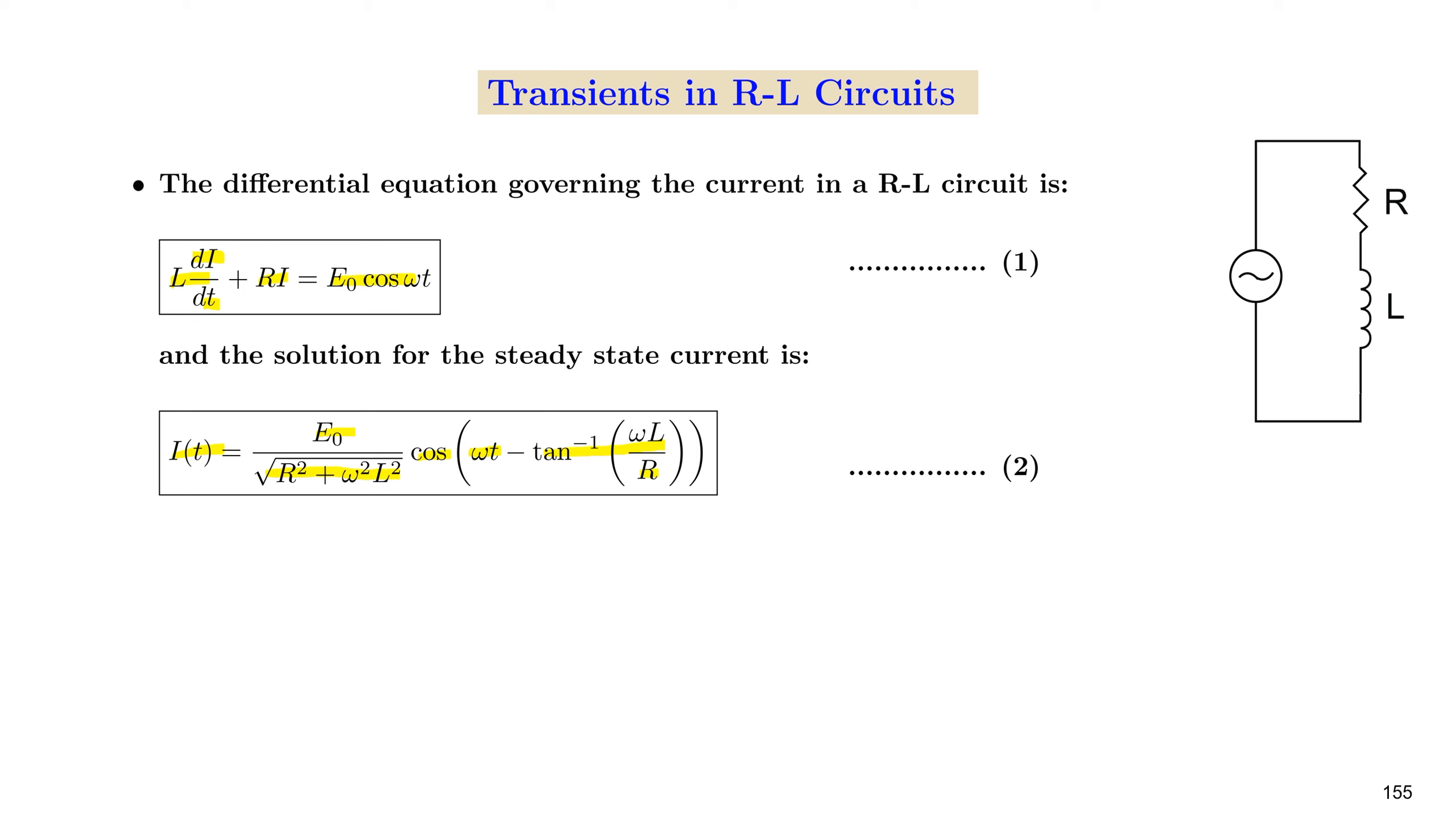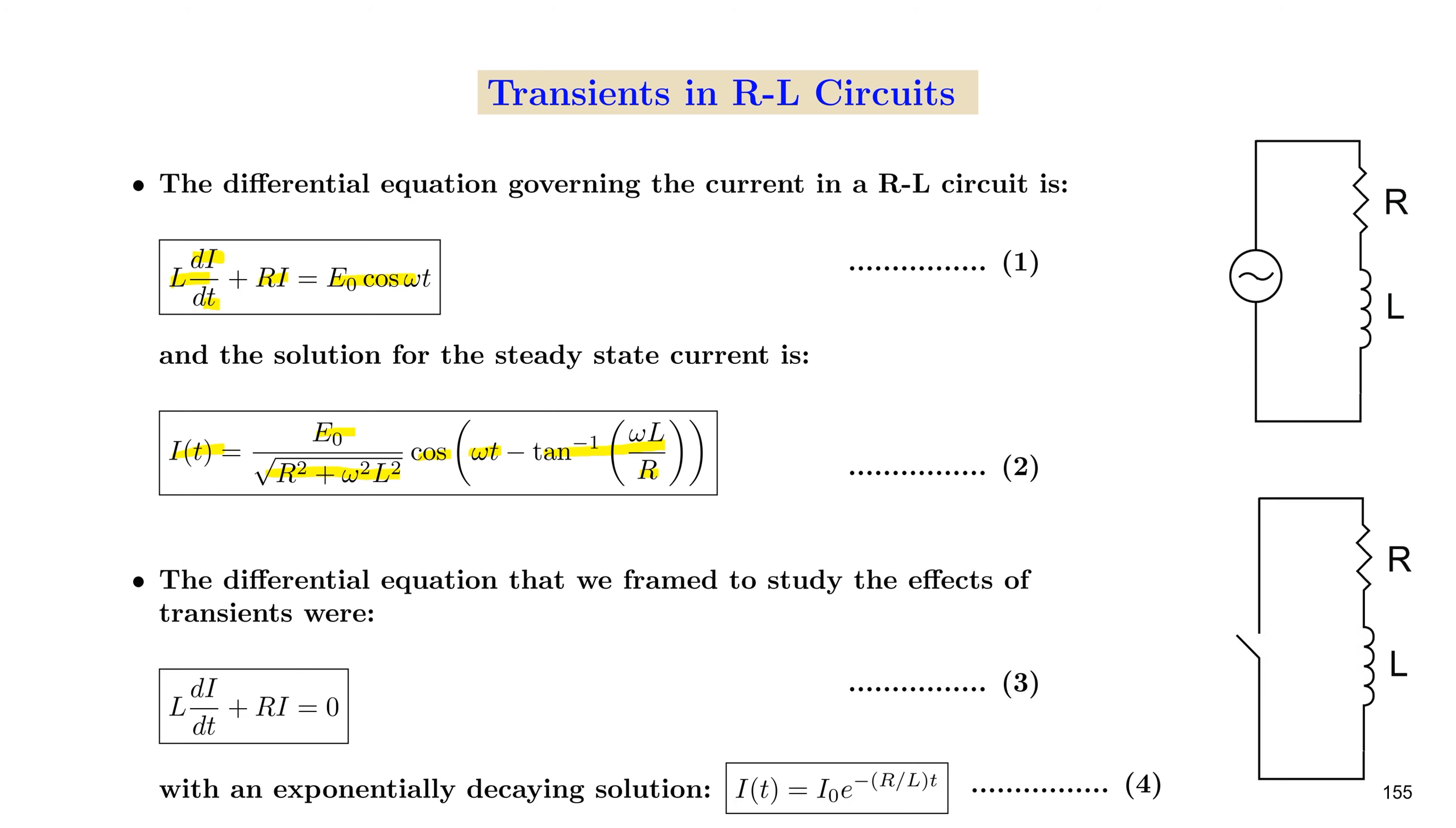The entire exercise that we performed to arrive at the solution for the current did not take into account the effect of transients. If we recall the circuit that we used for transient analysis, it essentially consists of a resistor, an inductor, and a switch.